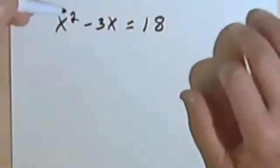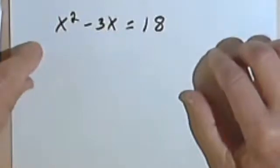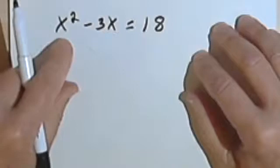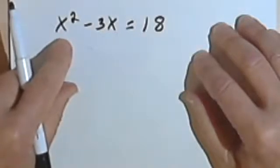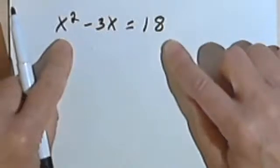I've got the equation x squared minus 3x equals 18. And because the largest exponent is a 2, this is considered a quadratic equation. Now when we say we want to solve it, what that means is we're looking for the value, or values that may be more than 1, we're looking for the values of x that will make this equation balance.